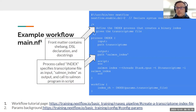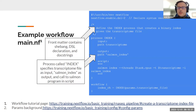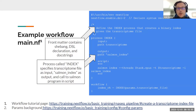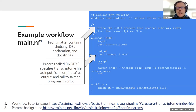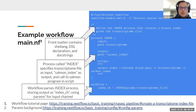Sometimes you'll see the process loaded from an external file — sourcing a file like index.nf from a folder called modules — which can be a more compact way of defining the process. Here, the INDEX process has an input channel 'transcriptome', an output path 'salmon_index', and the actual task calls the salmon software performing an index command with threads specified as the number of CPUs from the task, taking the transcriptome input and saving to the salmon index output file.